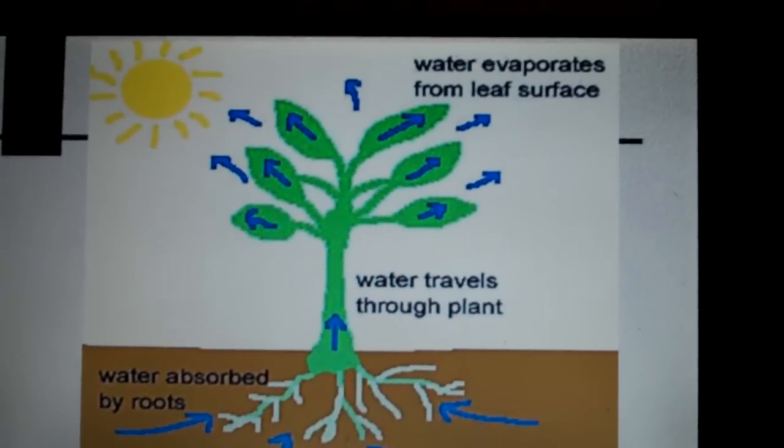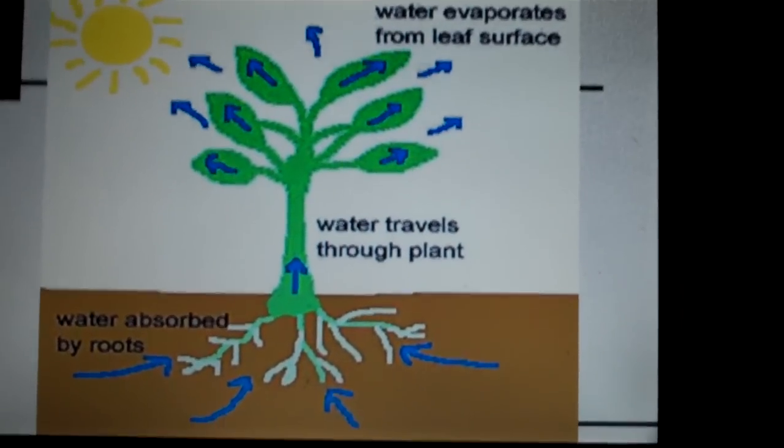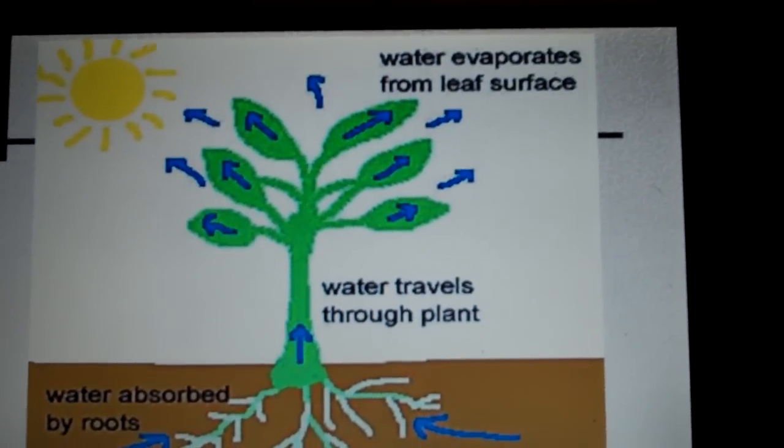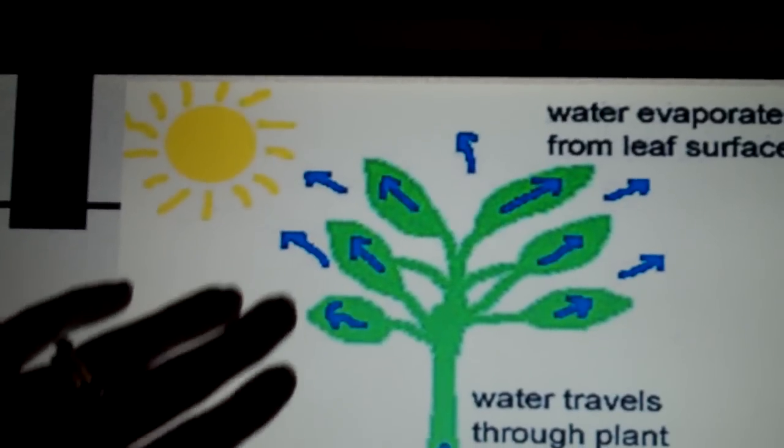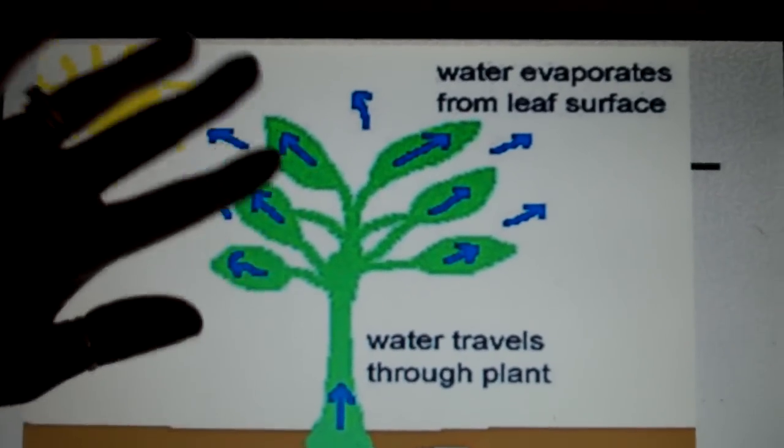Water in a plant is going to move from the roots to the tips of the plant. This process is called transpiration because the water is going to evaporate from the top of the plants, which will pull the water up from the roots.